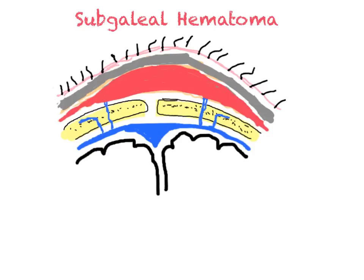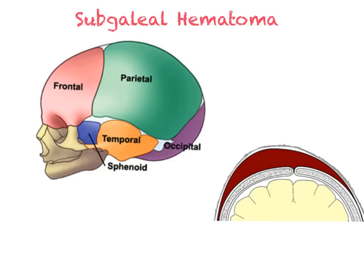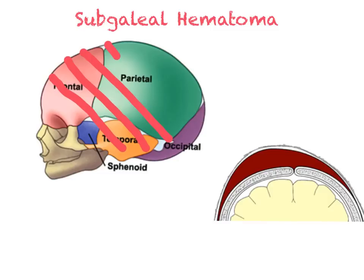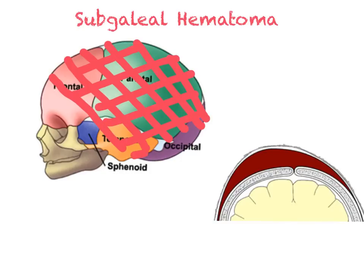Finally, let's talk about subgaleal hematomas. These are a diffuse subcutaneous hematoma that occurs below the third layer, the epicranial aponeurosis, and above the pericranium. This space is huge and the potential for exsanguinating into this space is huge. Anatomically, the space extends from above the frontal bone down to the occipital bone and from one ear to the other. Blood can fill this whole space and a child could essentially exsanguinate into this potential space once the bleeding starts.